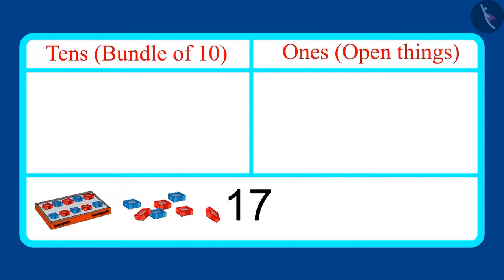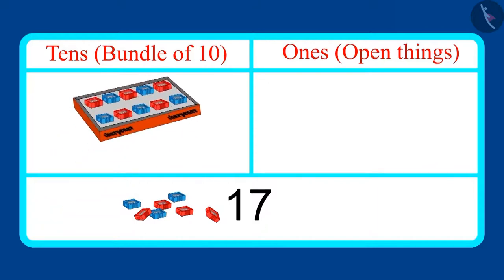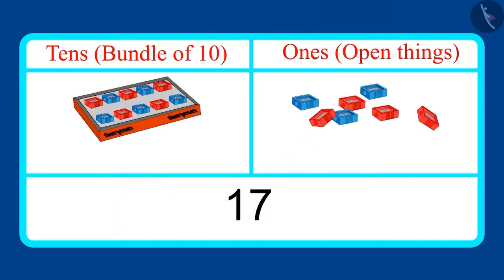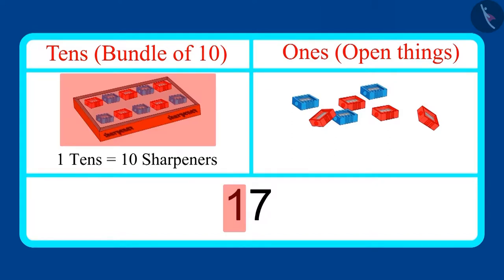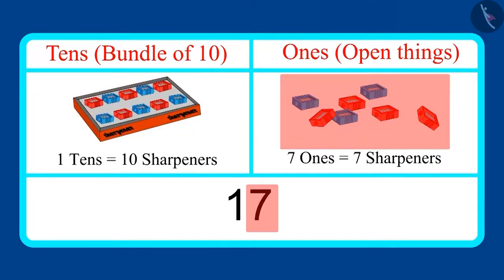Come on now, let's look at the number of sharpeners, which is 17. If we make one bundle of 10 in this, then seven more sharpeners remain. Which means it has one tens and seven ones.